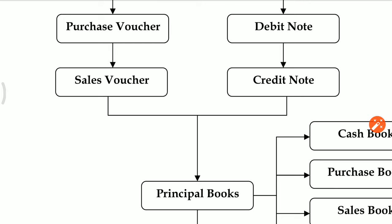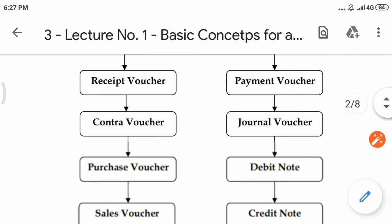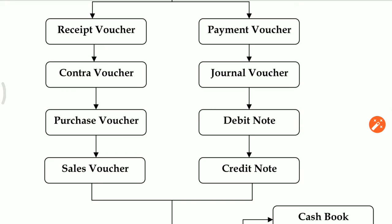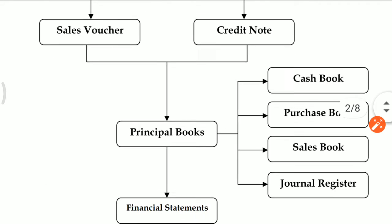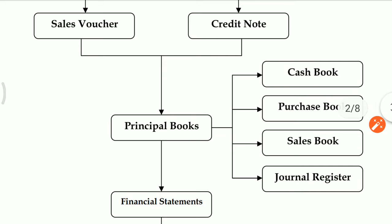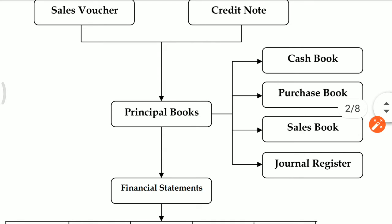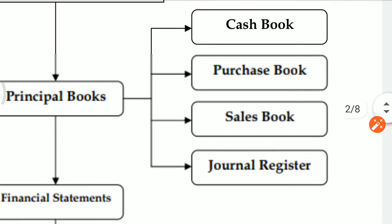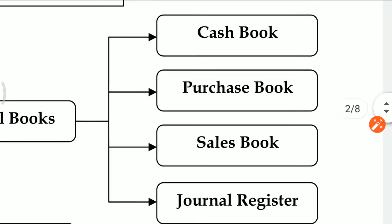Debit note means Purchase Return — reversed entry: Suppliers Account Debit to Purchase Return. Sales Voucher: when you sell goods on credit basis, entry will be Party Account Debit to Sales. In the case of Credit Note, it is a Sales Return entry: Sales Return Account Debit to Party Account. Friends, if you book all these 8 vouchers — Receipt Voucher, Payment Voucher, Contra Voucher, Journal Voucher, Purchase Voucher, Debit Note, Sales Voucher, and Credit Note — then principal books will be prepared automatically: Cash Book, Purchase Book, Sales Book, Journal, and Register.